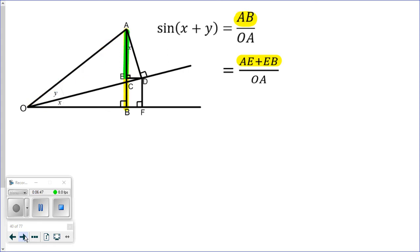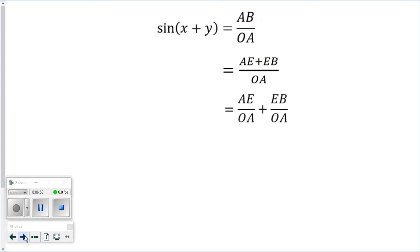Then I'm going to take side length, this line segment AB, and split it into two pieces, at least for the moment, one piece being A to E and the other piece being E to B. Then I'll just separate that fraction into two pieces, AE over OA and EB over OA. So at least as far as my proof goes, I now have two things added together, even though it doesn't at all look like I'm getting somewhere. Trust me, bear with me.